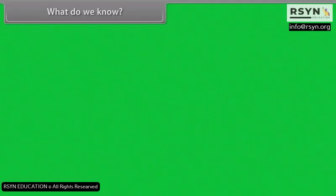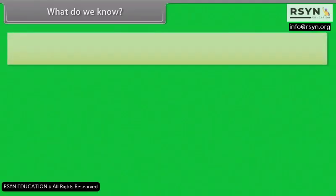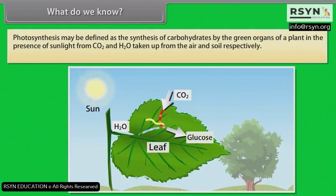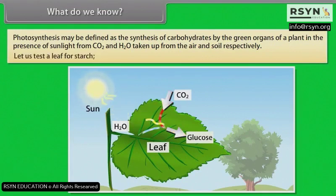Photosynthesis may be defined as the synthesis of carbohydrates by the green organs of a plant in the presence of sunlight, from carbon dioxide and water taken up from the air and soil respectively.